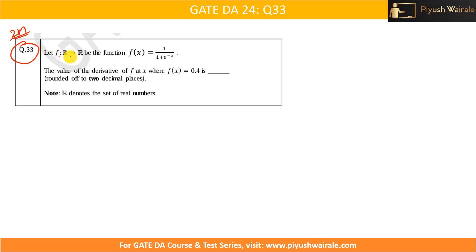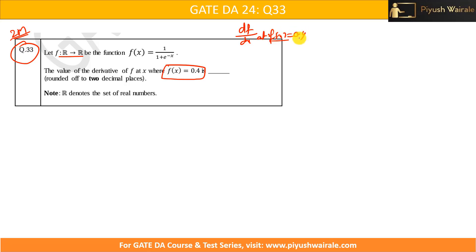The function is defined from R to R with f(x) = 1 / (1 + e^(-x)). We need to find the value of the derivative df/dx at the point where f(x) = 0.4. Kindly note that 0.4 is the value of f(x), not the value of x.